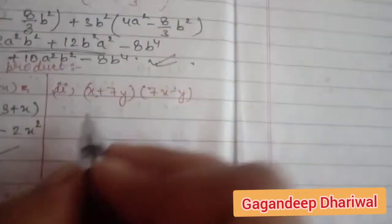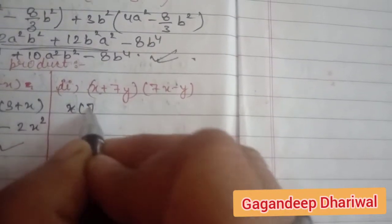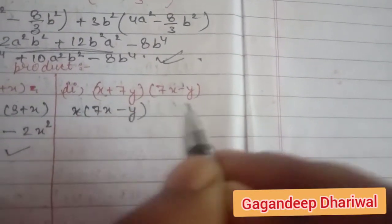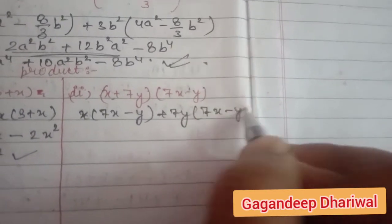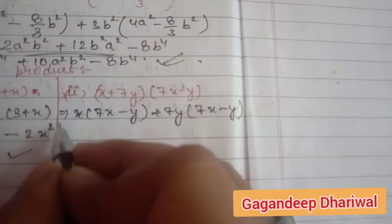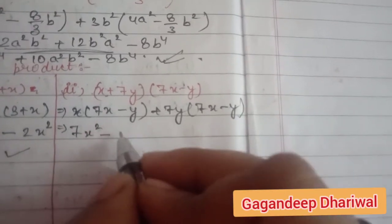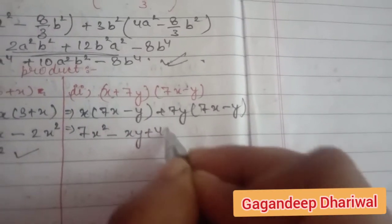Now the second one is x plus 7y and 7x plus y. So we have to write x in bracket times 7x minus y, plus 7y in bracket times 7x minus y. This gives us 7x squared minus xy plus 49xy, then 7y squared.